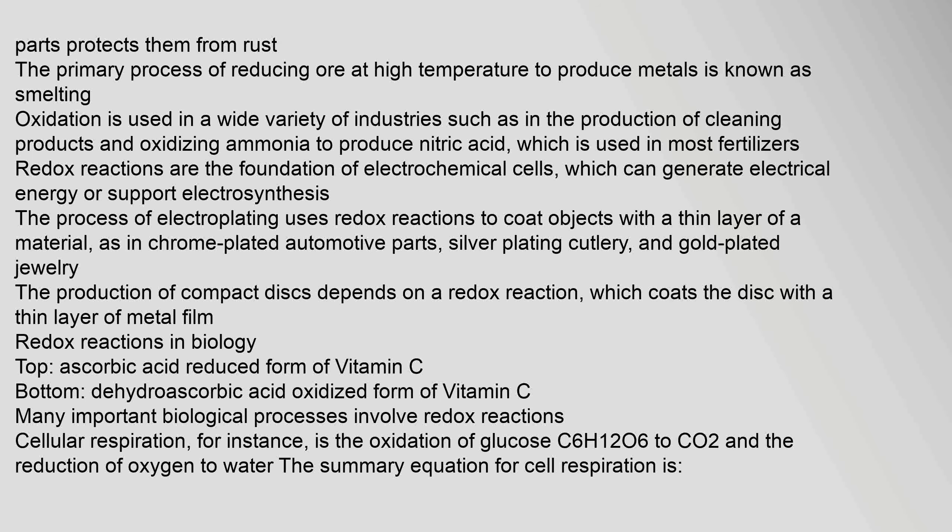The primary process of reducing ore at high temperature to produce metals is known as smelting. Oxidation is used in a wide variety of industries, such as in the production of cleaning products and in oxidizing ammonia to produce nitric acid, which is used in most fertilizers. Redox reactions are the foundation of electrochemical cells, which can generate electrical energy or support electrosynthesis. The process of electroplating uses redox reactions to coat objects with a thin layer of a material, as in chrome-plated automotive parts, silver-plated cutlery, and gold-plated jewelry. The production of compact discs also depends on a redox reaction, which coats the disc with a thin layer of metal film.